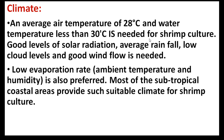Next, coming to the climate and climatic conditions. We want to select a site with favorable climatic conditions — with adequate temperature around 28 to 40 degrees centigrade, good levels of solar radiation, good rainfall, good wind flow, and low evaporation rate. Most subtropical coastal areas provide such suitable climate for shrimp culture.